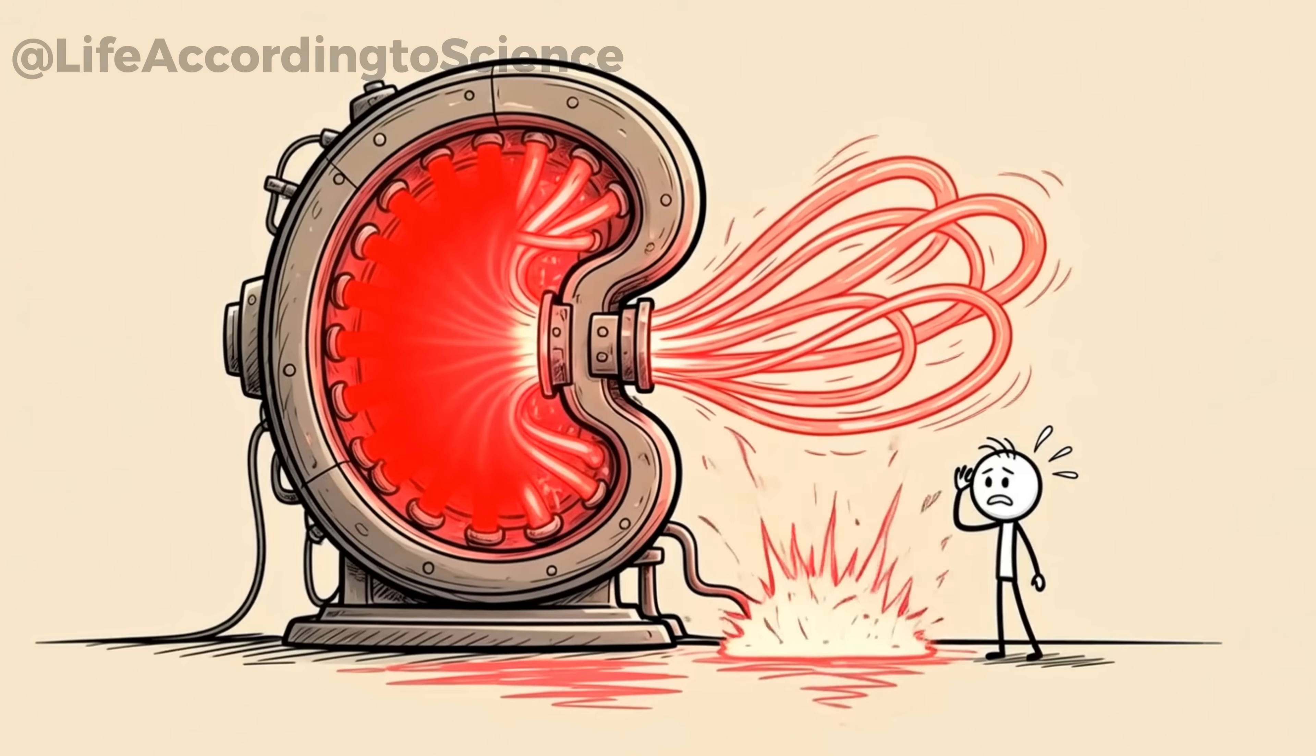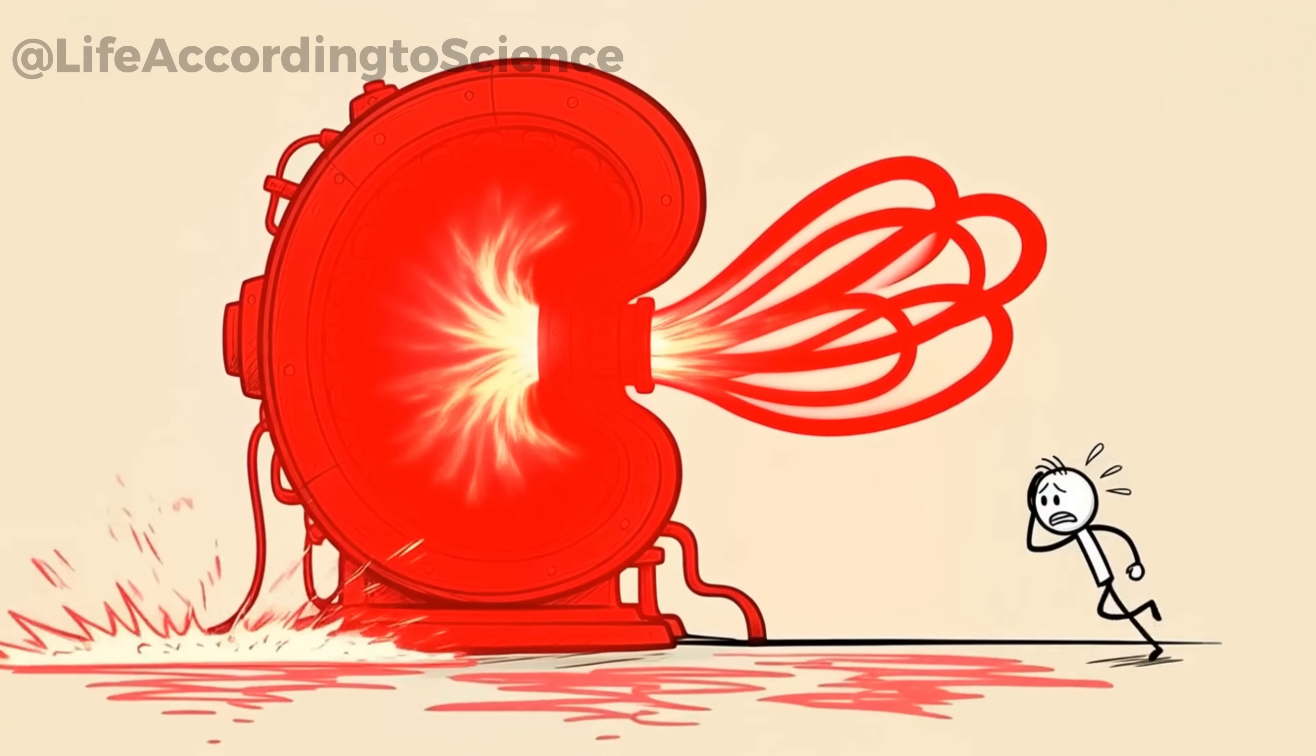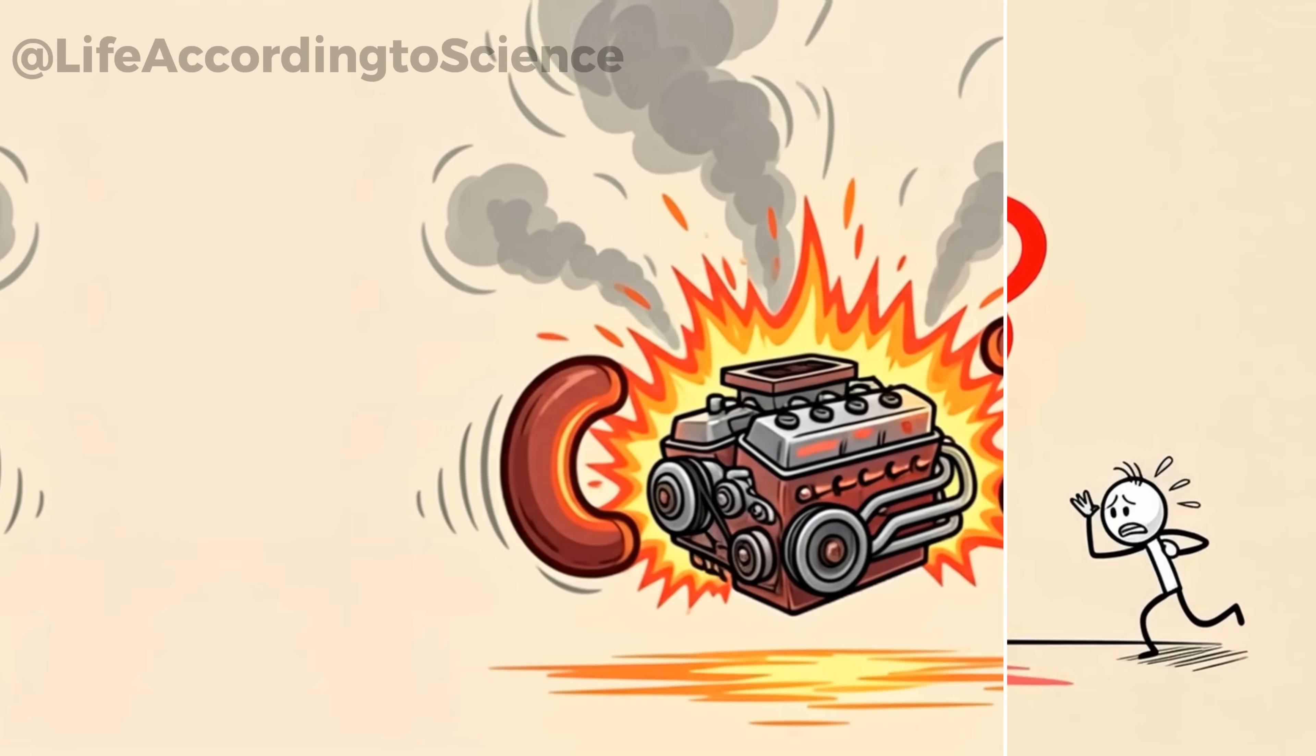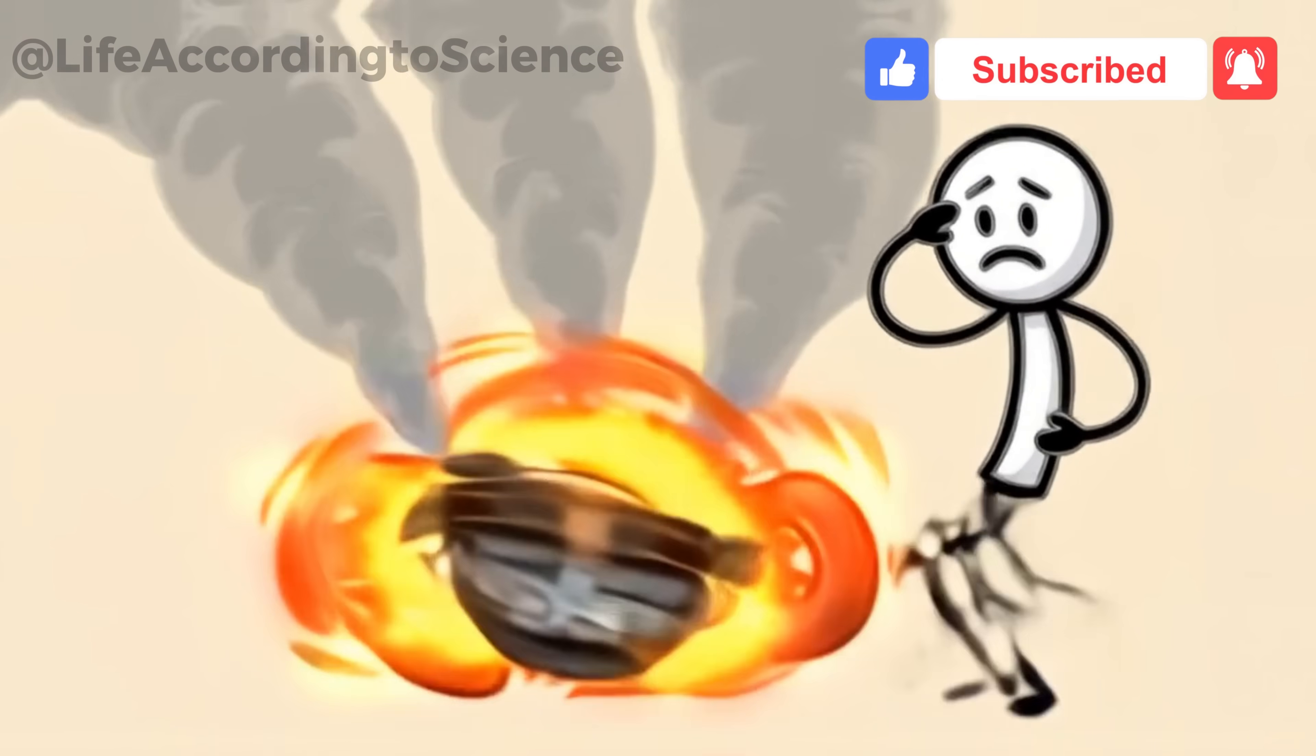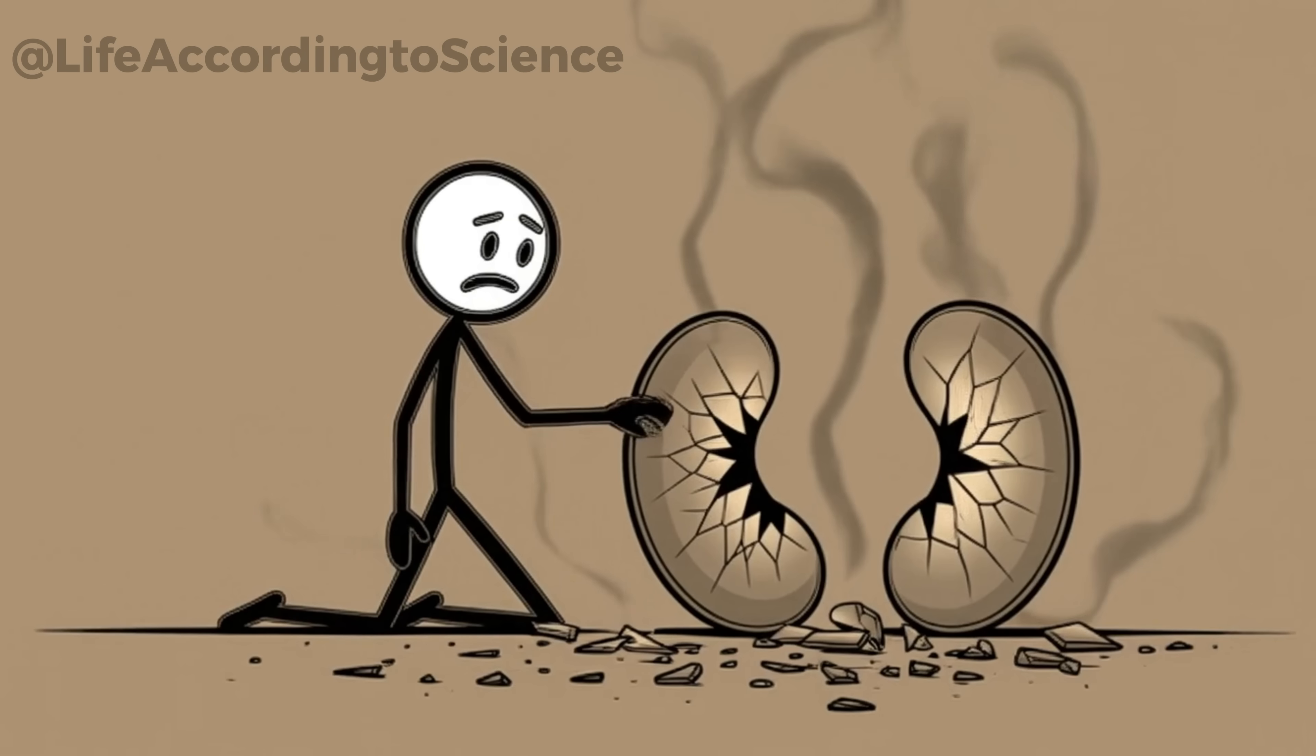Science shows that high sugar intake increases the risk of glomerular hyperfiltration, a condition where the kidneys filter too much blood. It may sound like they're doing a better job, but in reality, it's like revving your car engine at maximum speed all day long. Eventually, parts start to wear out.